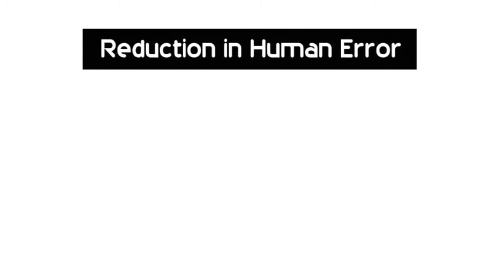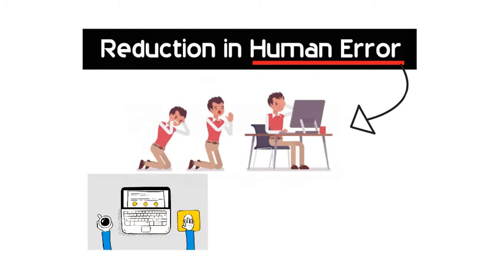1. Reduction in human error. The word human error was born because humans make mistakes from time to time. Computers, however, do not make these mistakes if they are programmed properly.